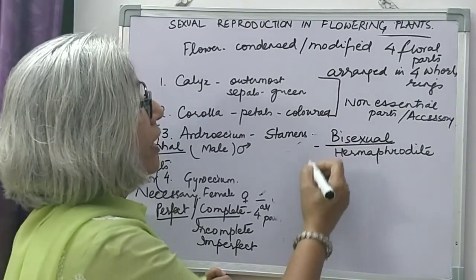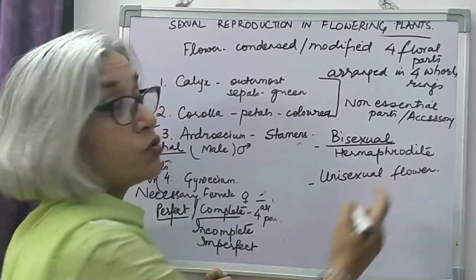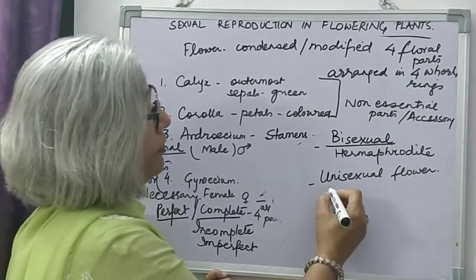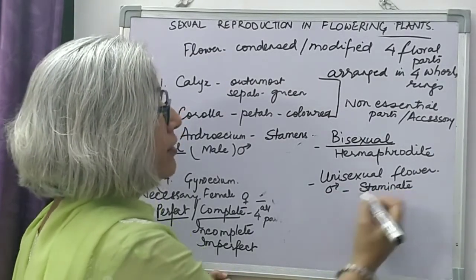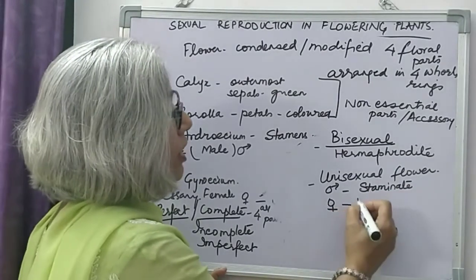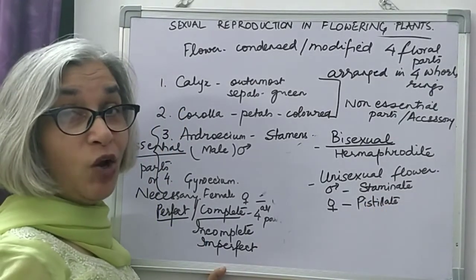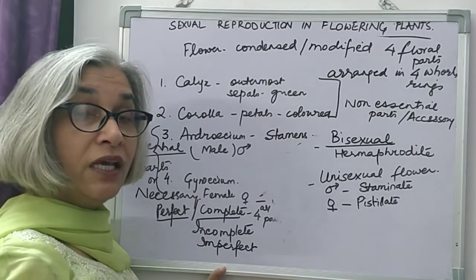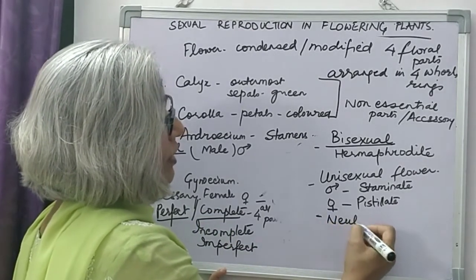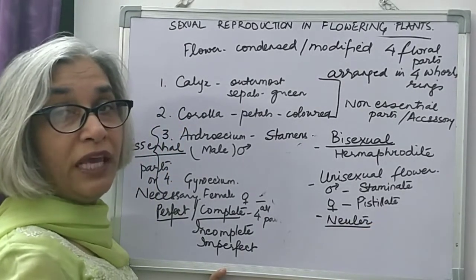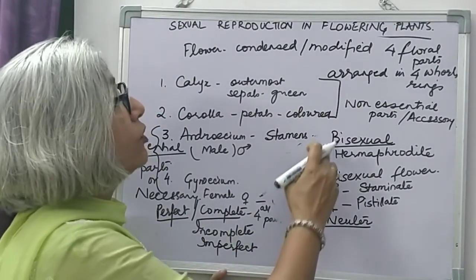When both androecium and gynoecium — male and female parts — are present, the flower is bisexual. If any one of them is absent, the flower is called a unisexual flower — it contains only one sex. If the male part is present, the flower is called a staminate flower. If only the female part is present, the flower is called a pistillate flower. Sometimes both are absent — the flower does not contain male or female parts — in that case the flower is called a neuter flower.